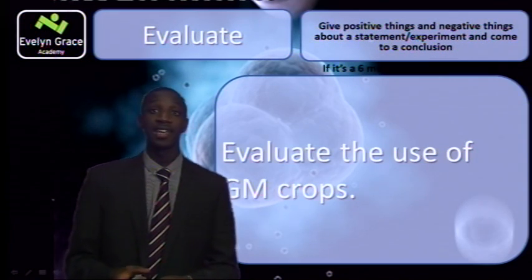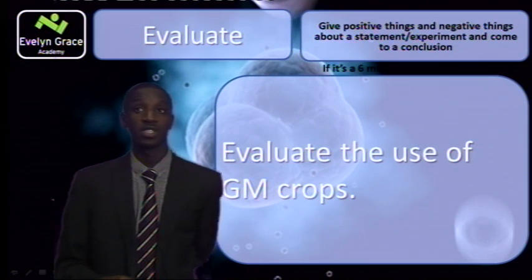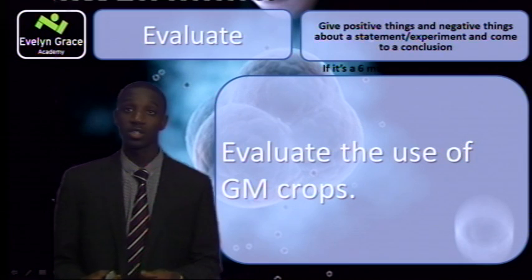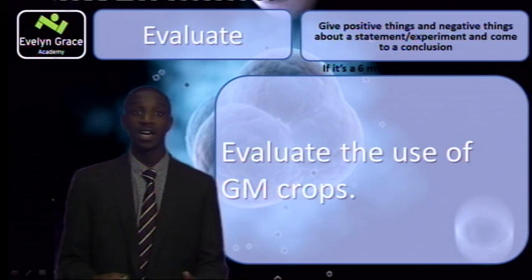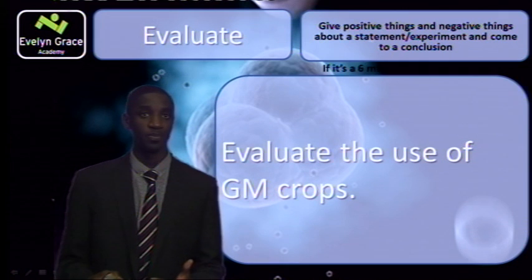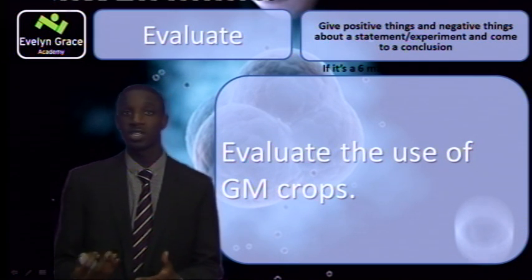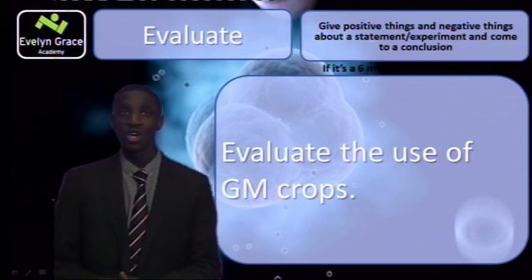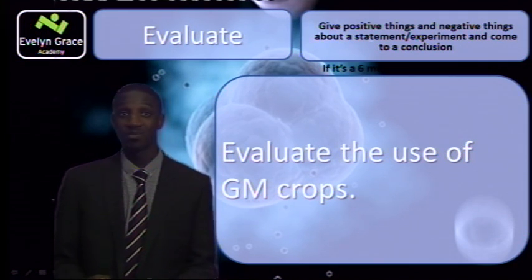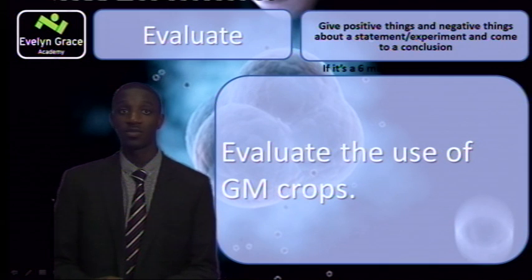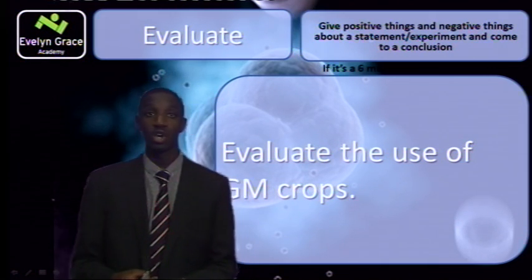Evaluate: give positive things and negative things about a statement and finish with a conclusion. One question that may come up is to evaluate the use of genetically modified crops. For advantages: you get a higher yield, you use less pesticides — which is good for the environment — and fewer pests. However, on the disadvantages side: multinationals may exploit poorer farmers. In terms of benefits to consumers, it's questionable — both the taste and the price, as genetically modified crops are generally more expensive. So now I need to finish with a conclusion, which is your own personal opinion.